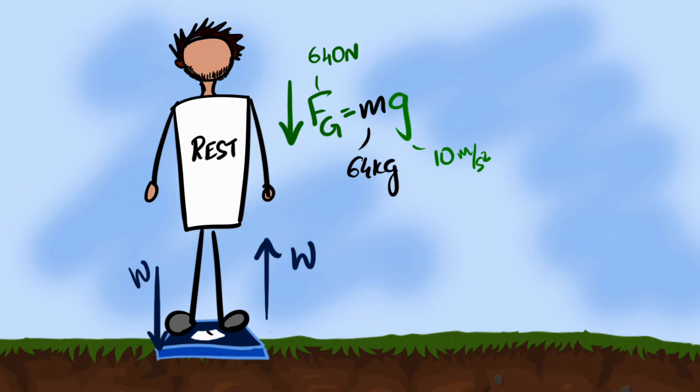Now in this example, because I'm at rest, I'm not accelerating, the forces on me must be balanced. And so in this particular case, weight happens to be the same as the gravitational force. This was a simple boring case. Now let's make things interesting.